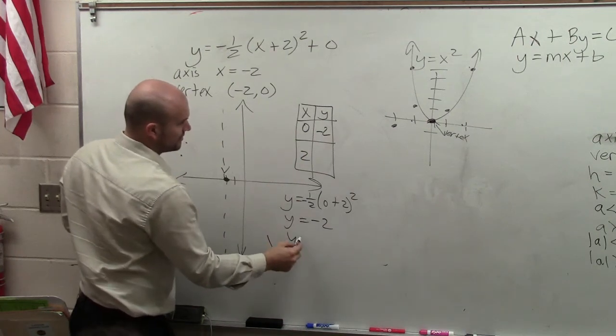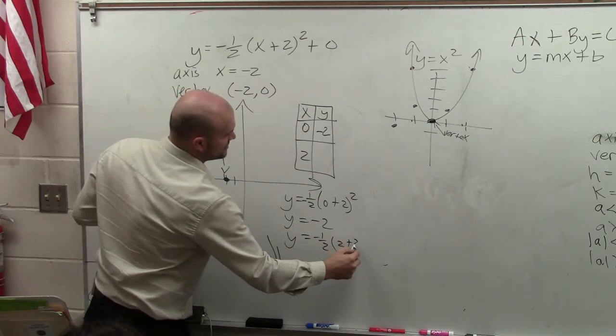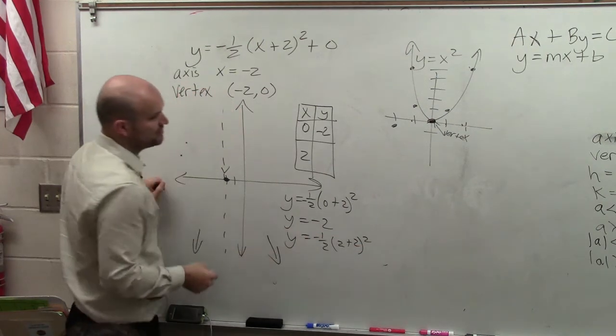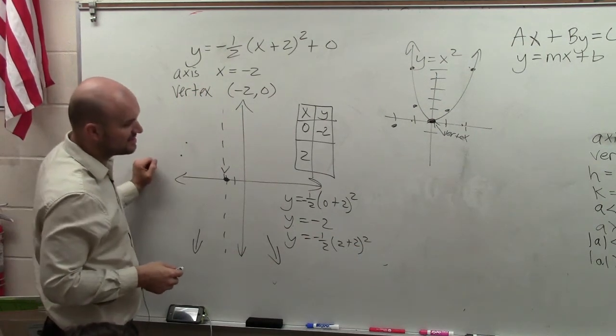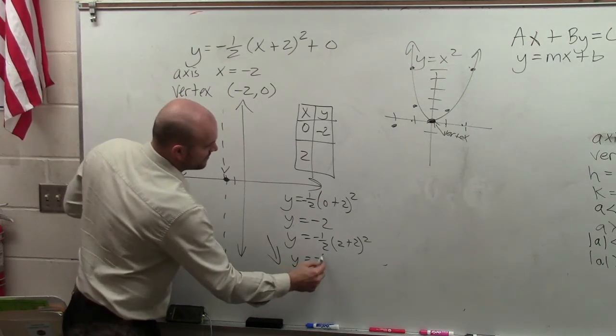Now let's do the other one, 2. y equals negative 1 half times 2 plus 2 squared. 2 plus 2 is 4. 4 squared is 16. 16 times negative 1 half is negative 1 8, or negative 8.